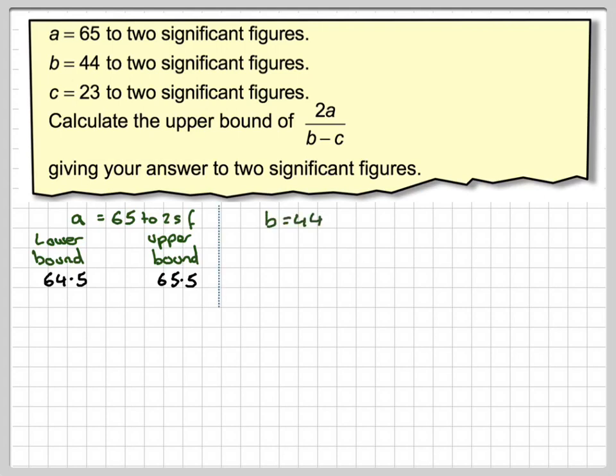For B being equal to 44, the lower bound is going to be 43.5, and the upper bound is going to be 44.5.